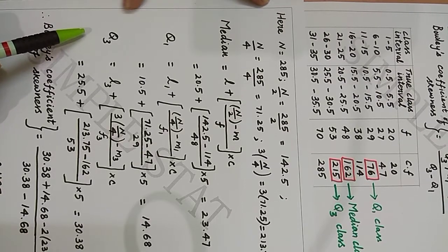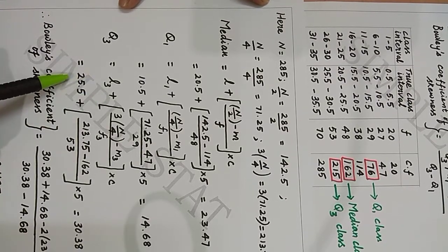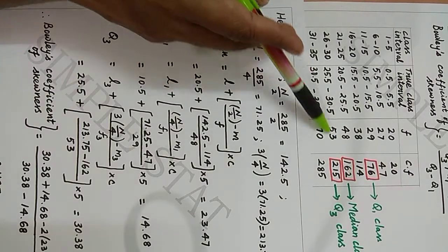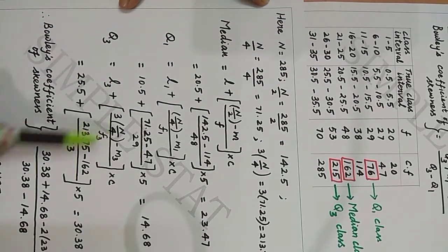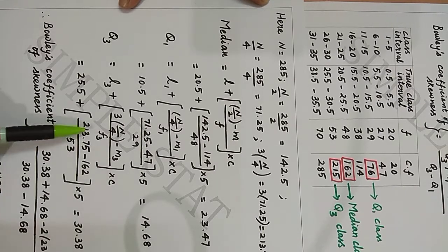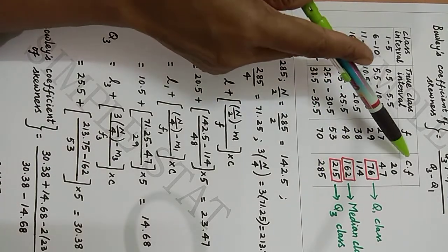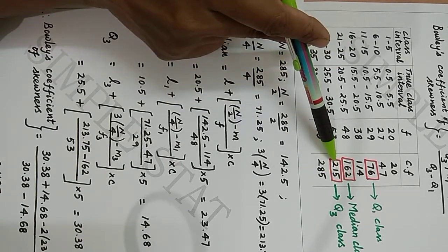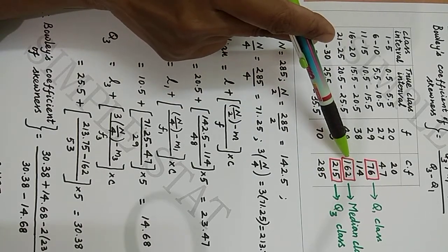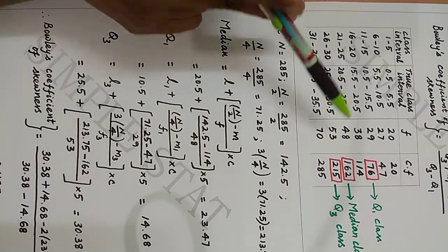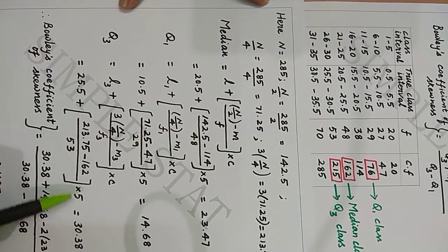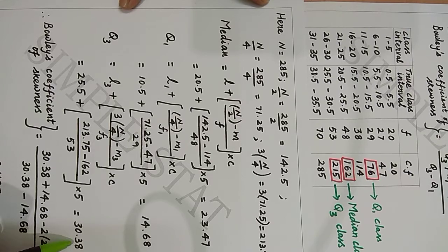Now let's proceed with Q3, given by L3 + (3N/4 - M3) / F3 × C. L3 denotes the lower limit of the Q3 class, which is 25.5. 3N/4 is 213.75. M3 denotes the cumulative frequency value of the pre-Q3 class; since the Q3 class is 215, that cumulative frequency is 162. F3 denotes the frequency of the Q3 class, which is 53, and C is the width of the uniform class interval, which is 5. Therefore we get Q3 = 30.38 on simplifying.